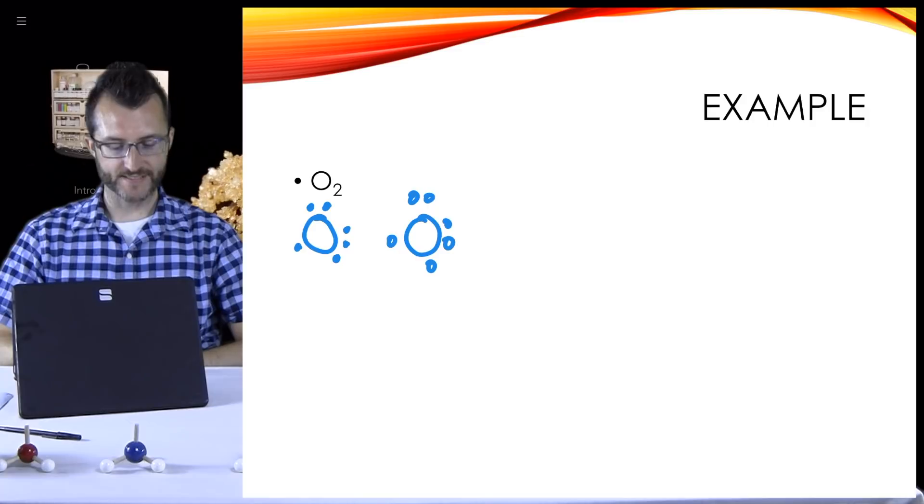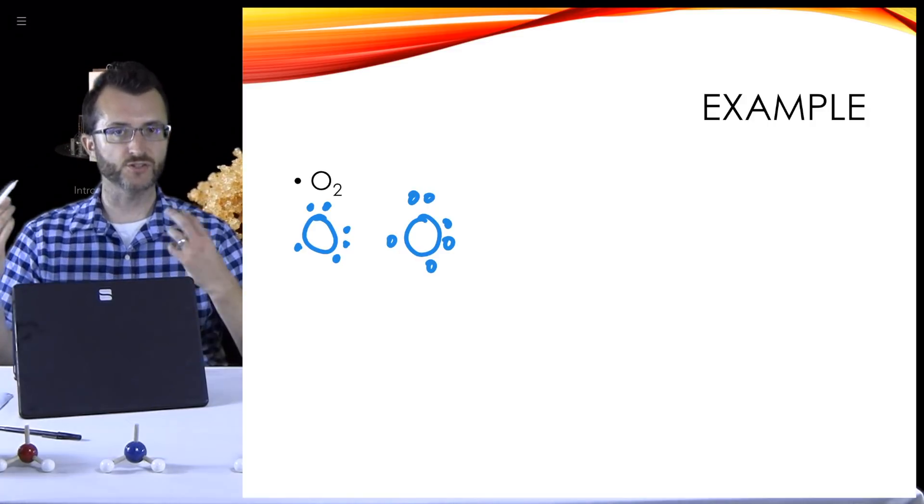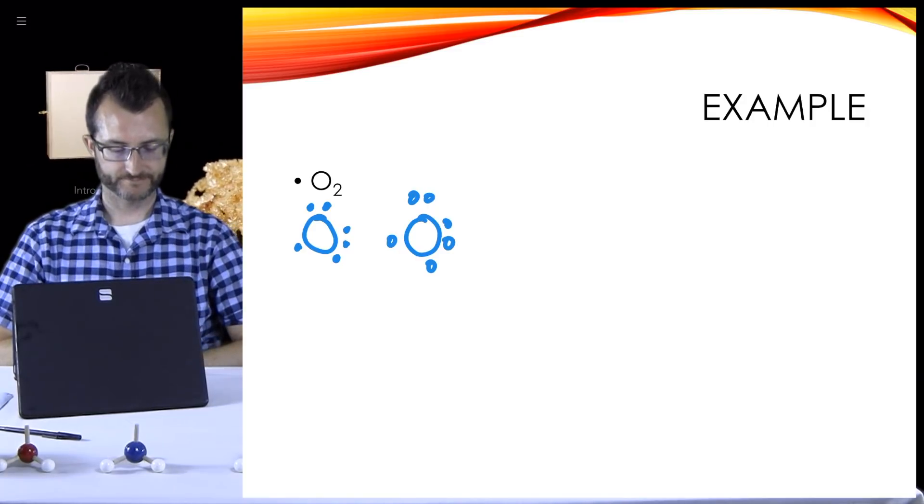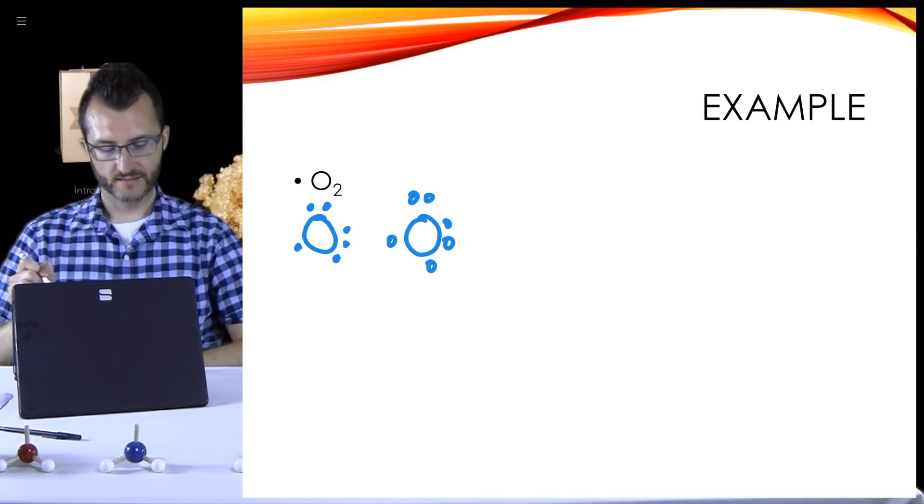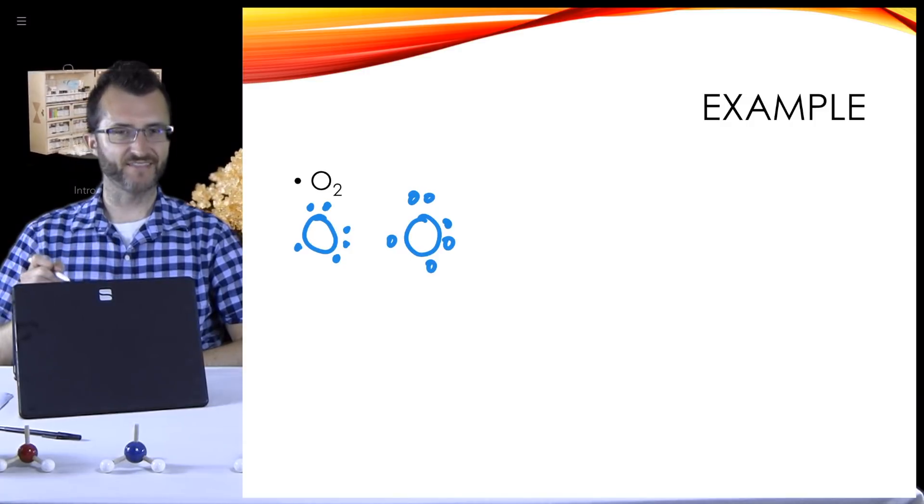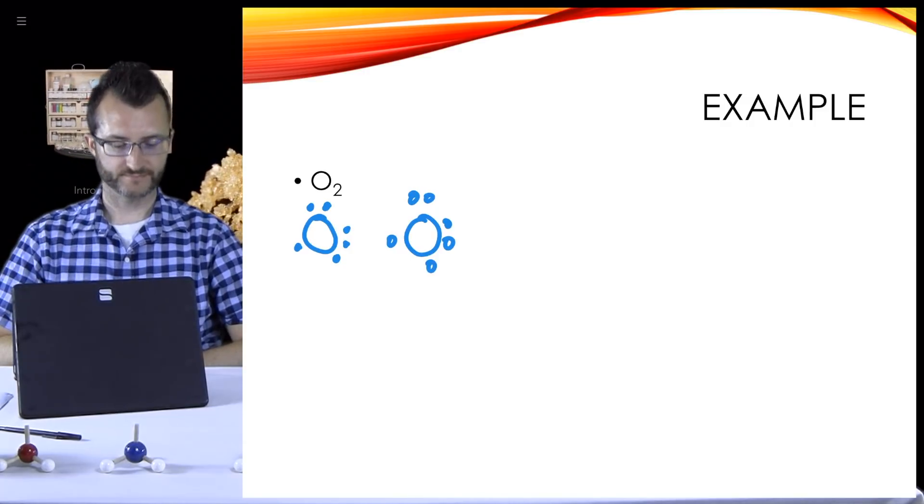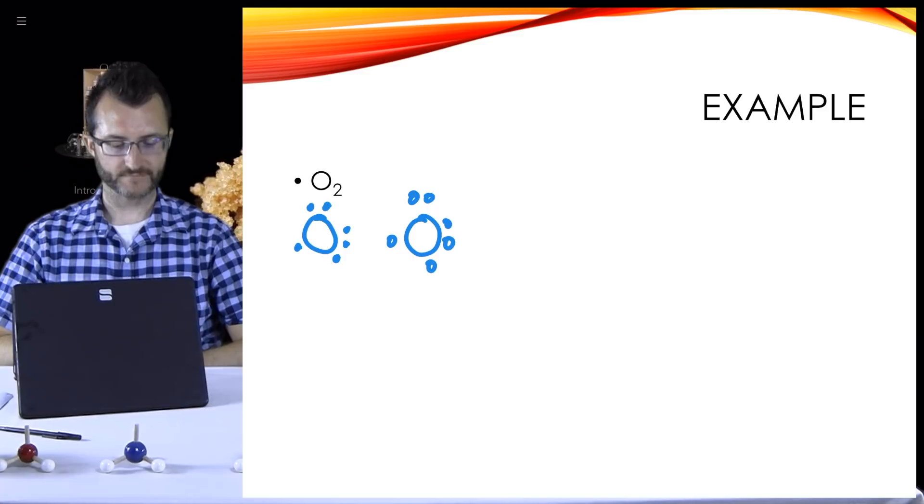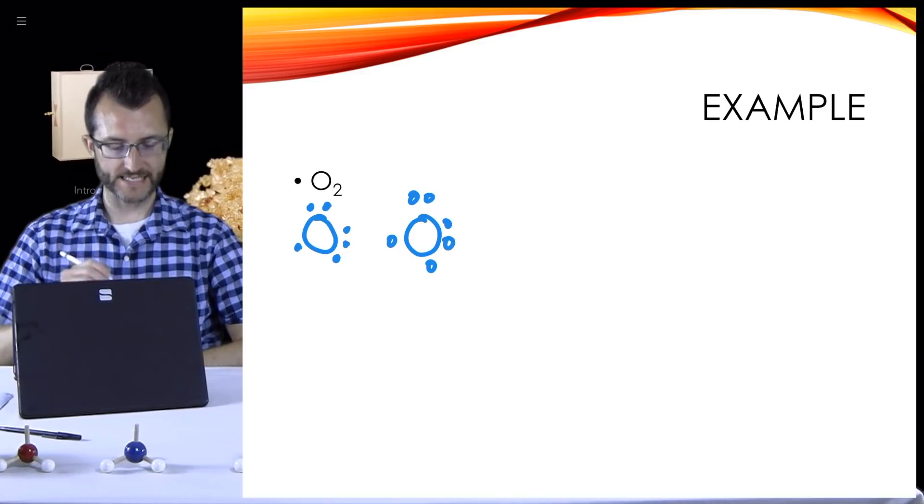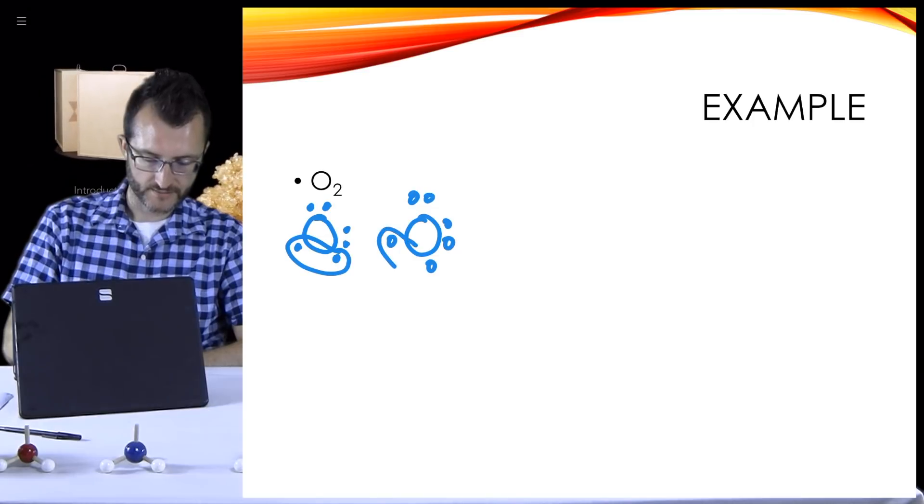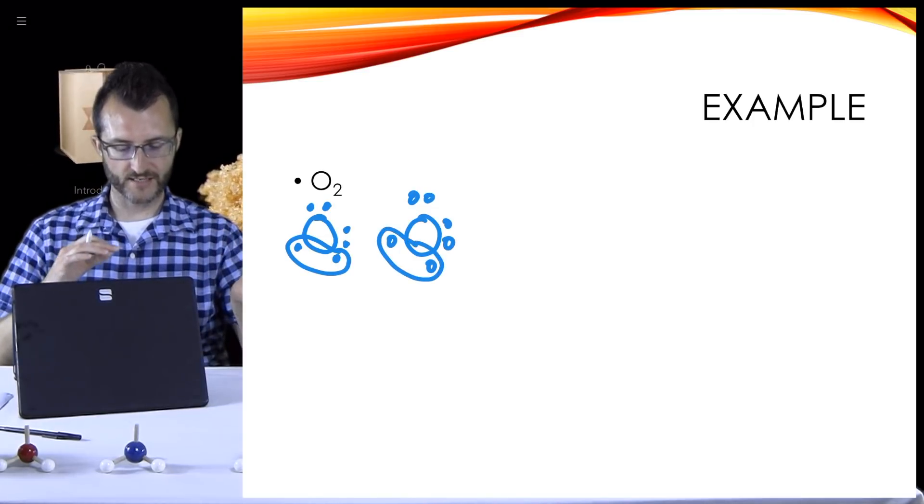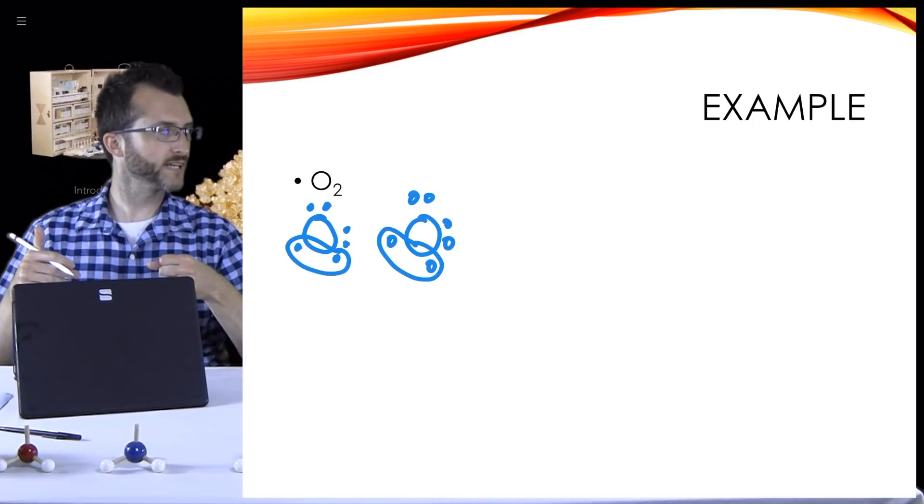So how many do they need to get to their octet? Well, since they each have six, they're both going to need two more to get eight. So is just sharing one pair going to do it? Well, if they shared one pair, they would each have seven now, not eight. So we're going to need to share more than just one pair then.